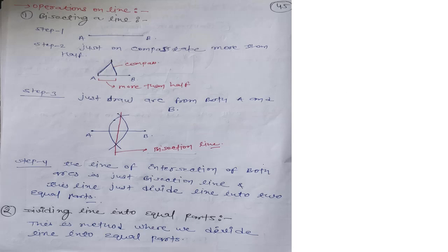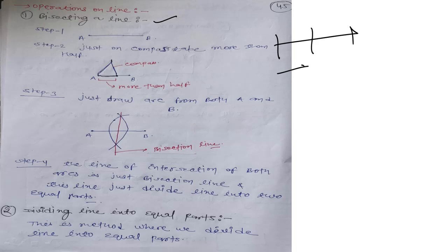Now we will discuss operations on lines. The first operation is bisecting a line. For example, this is the line and we need to divide it into two equal parts without a scale. First step: draw the line which we want to intersect in two equal parts. Take your compass and open it more than half. Then put this compass on point A and make one arc. From point B, make one arc. The middle point where they intersect will divide this line into two equal parts. This is the first operation.